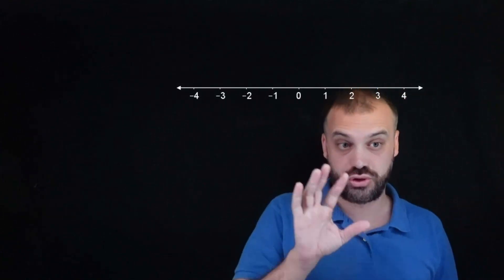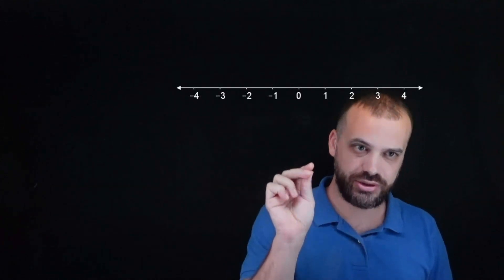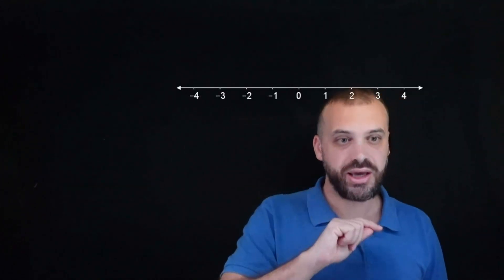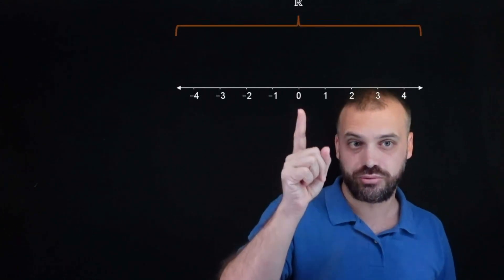Now there are numbers that don't sit on the number line, believe it or not, but that's a topic for another video. We're only interested in numbers that sit on the number line, and numbers that sit on the number line are called real numbers.